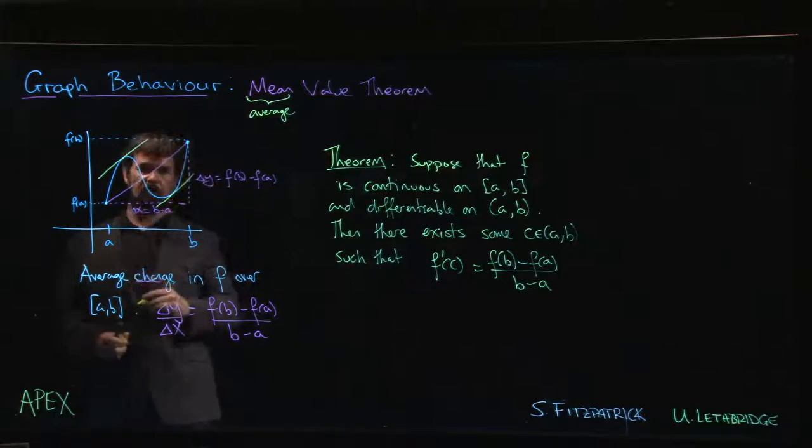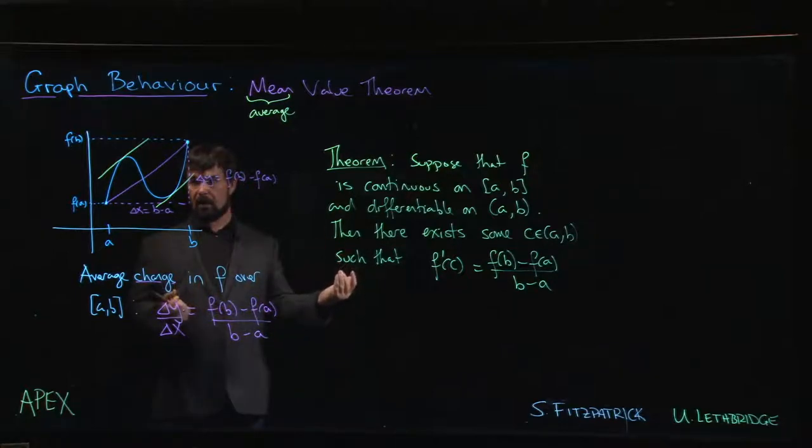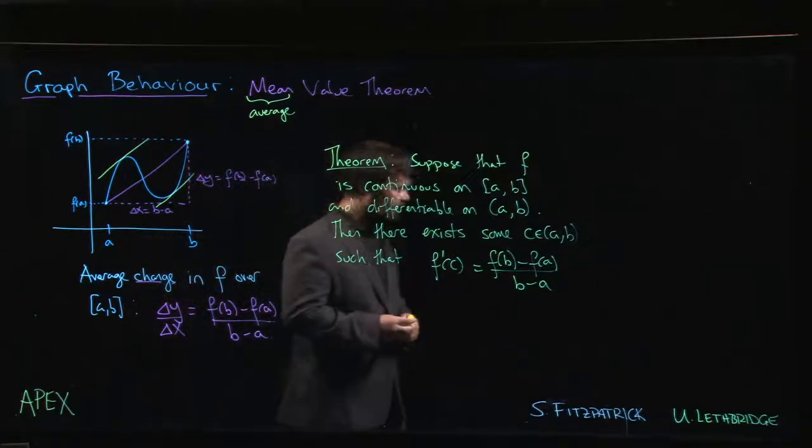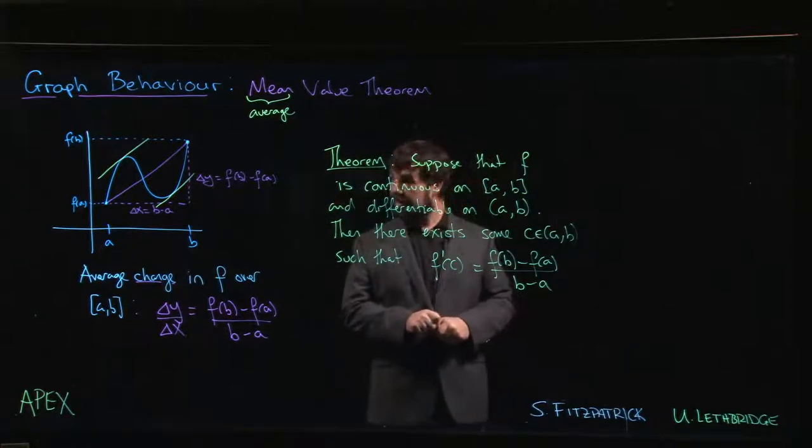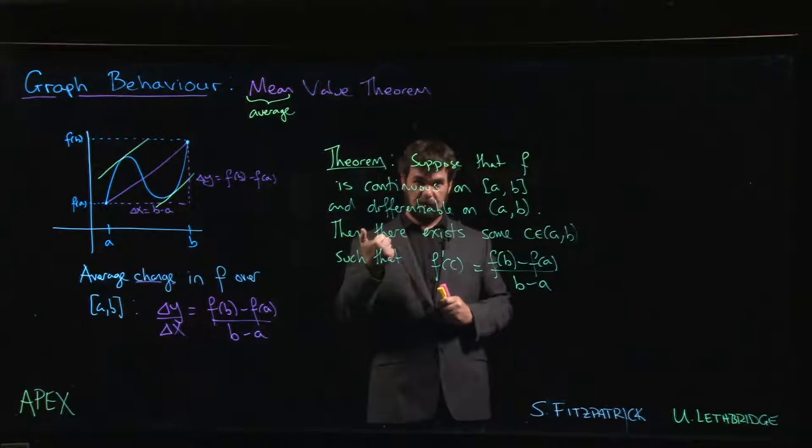The Mean Value Theorem guarantees that those points exist. Much like the Intermediate Value Theorem, it doesn't tell you where to find them—it only guarantees the existence of at least one such point.